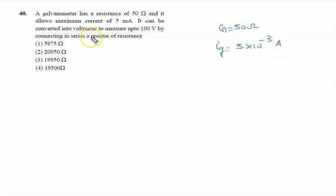It can be converted into voltmeter. Galvanometer will convert into the voltmeter when we connect a resistance in series of this galvanometer to measure up to 100 volt. So what is the value of the series resistance?